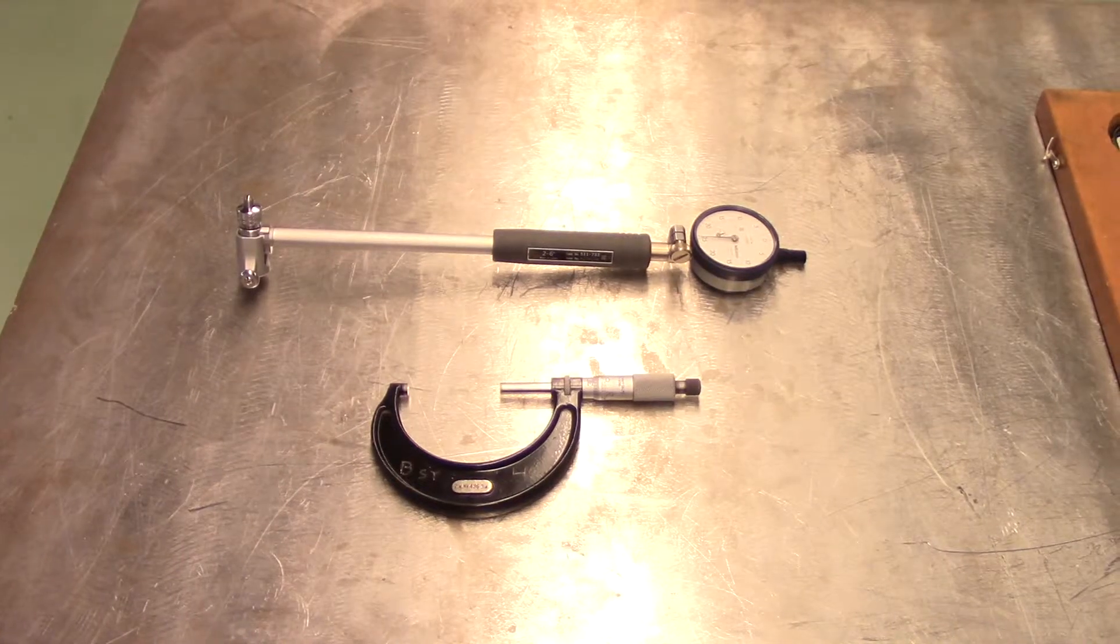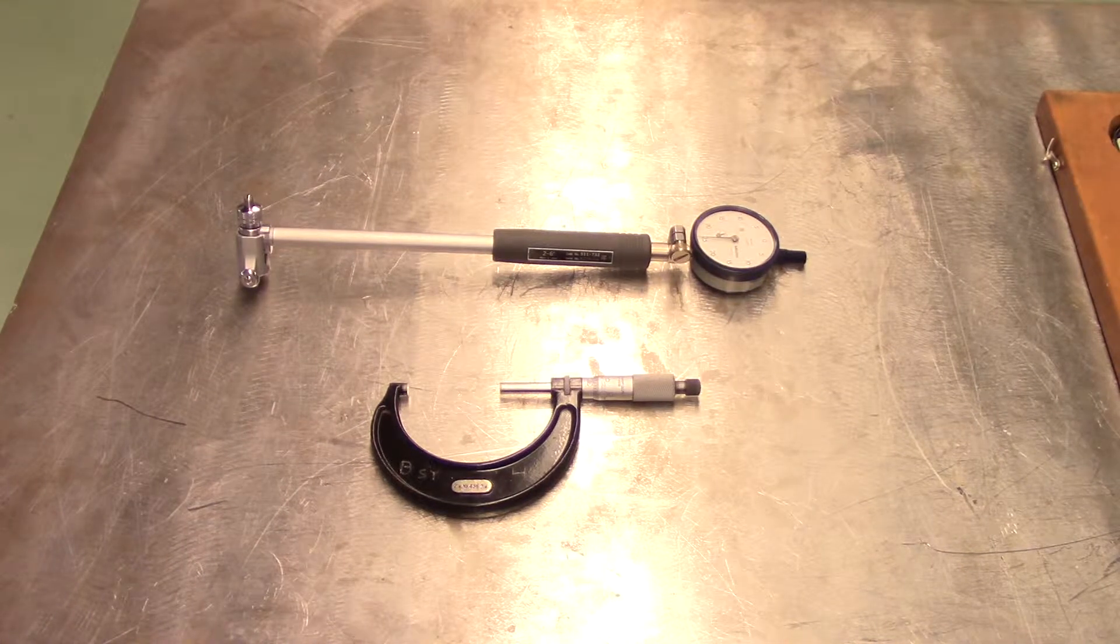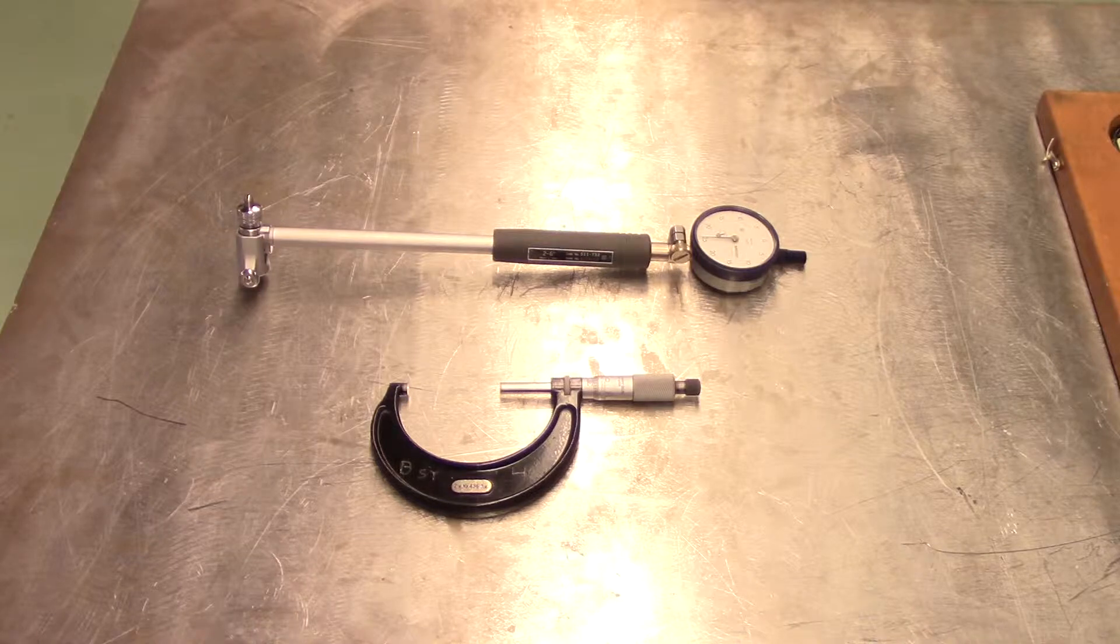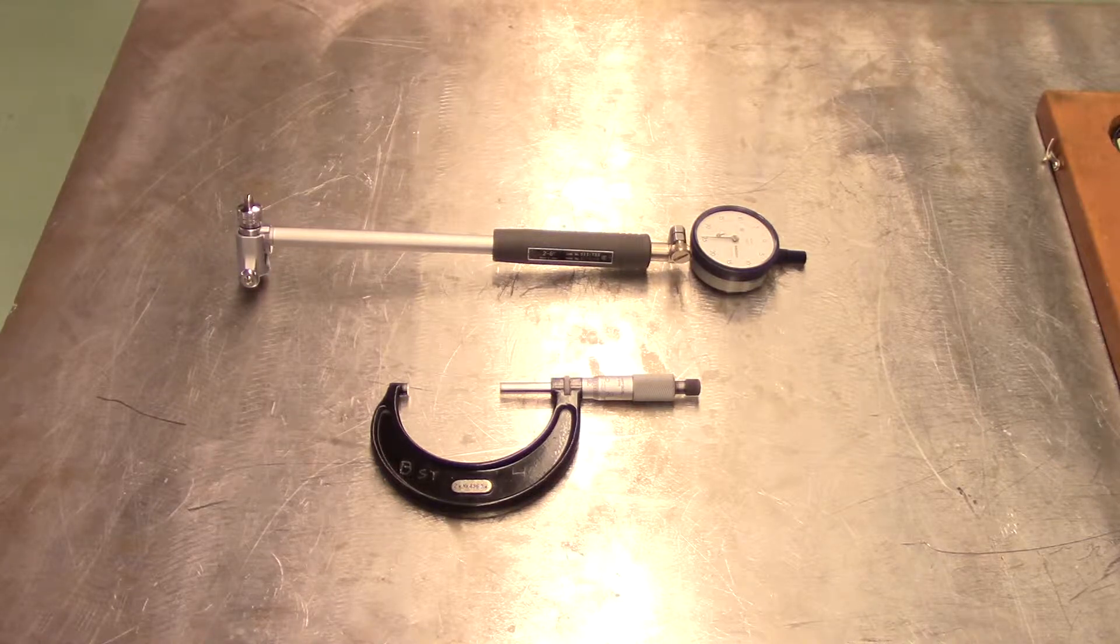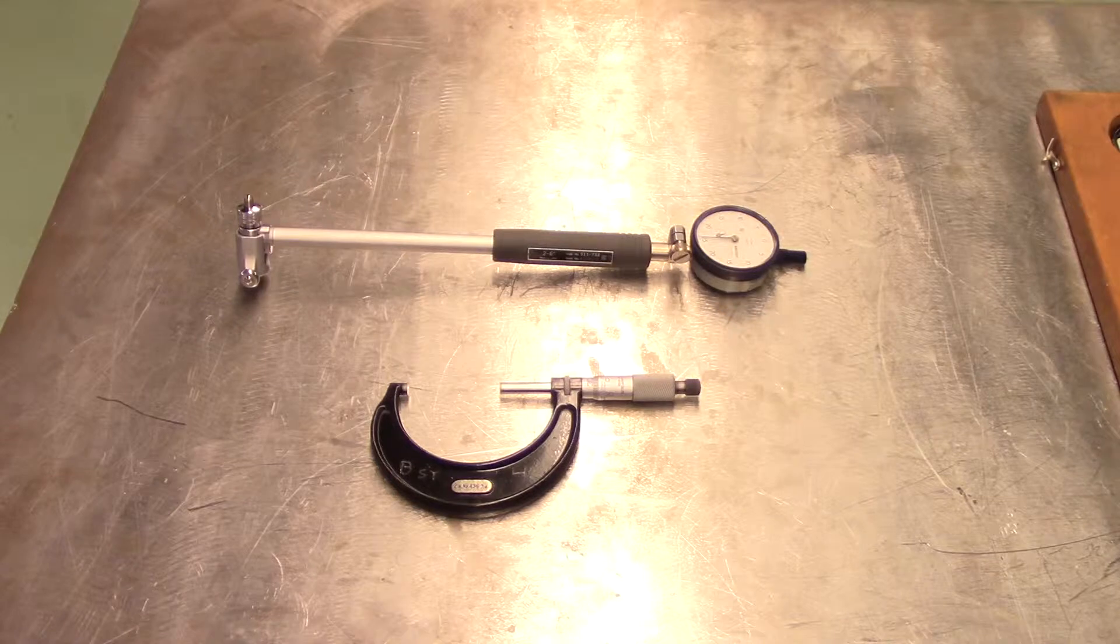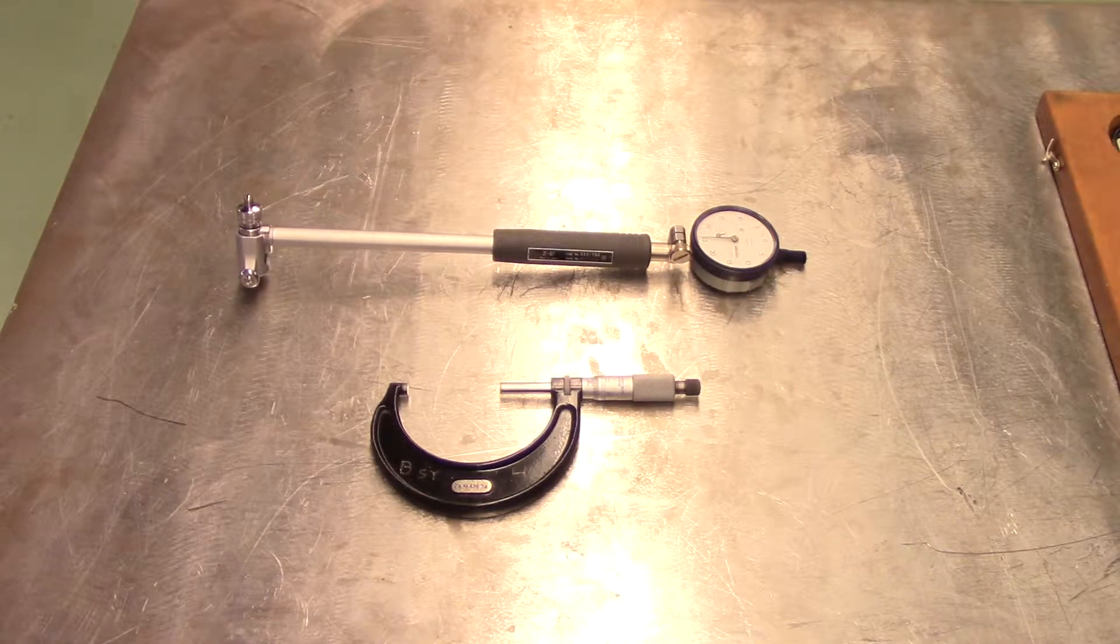To precisely measure the size of a bore's inside diameter, you will require a dial bore gauge and a micrometer. A dial bore gauge is a precision comparison tool.